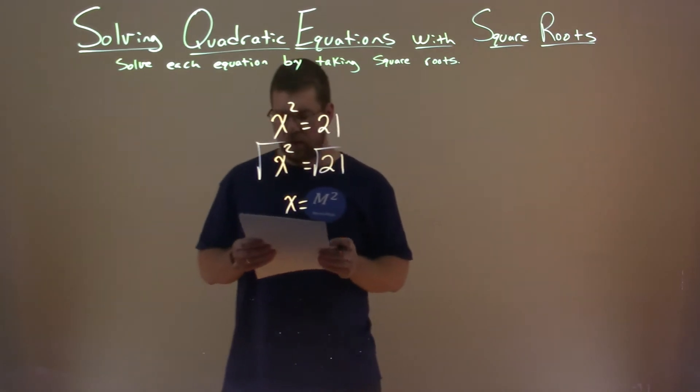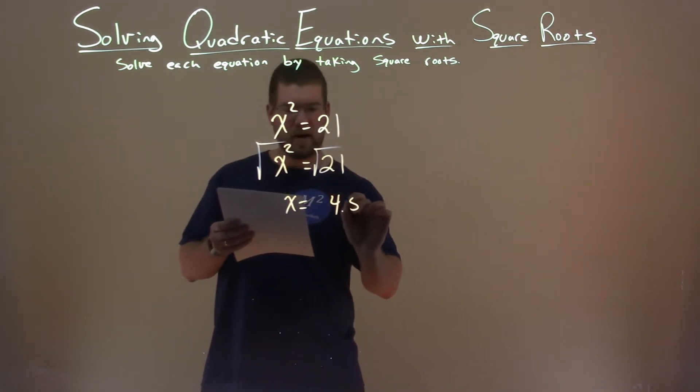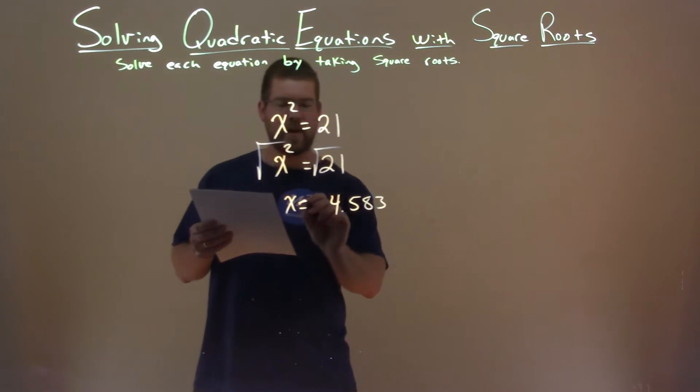Square root of 21, though, becomes the decimal, which is 4.583, and that is approximate.